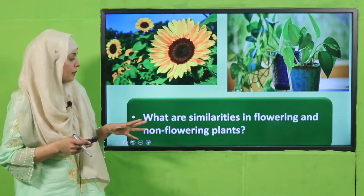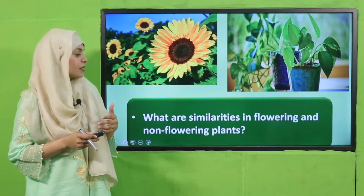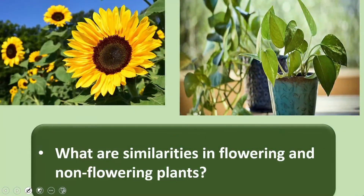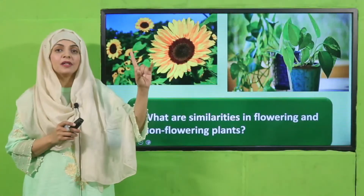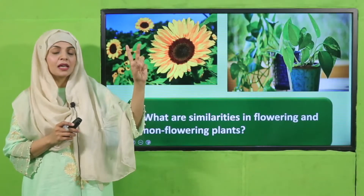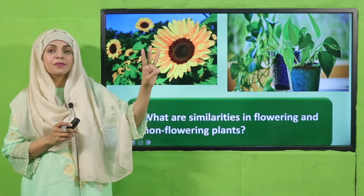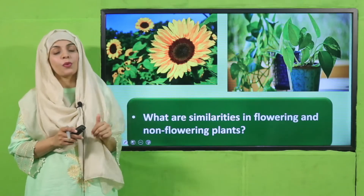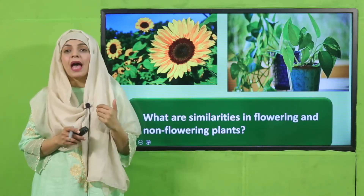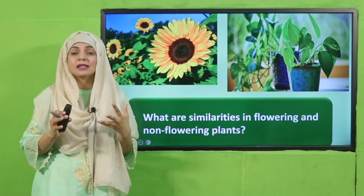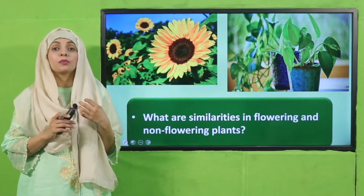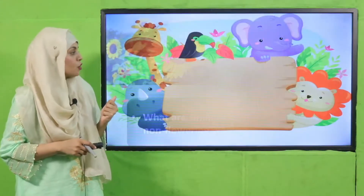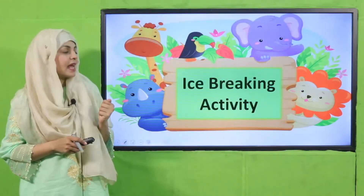Look at the pictures and tell me: what are the similarities in flowering and non-flowering plants? Both have leaves, stem, and roots. Very good! Next, both have the photosynthesis process in them, and both reproduce.